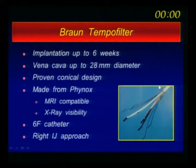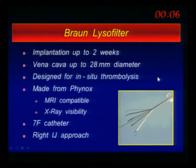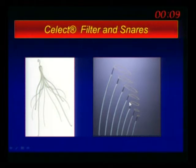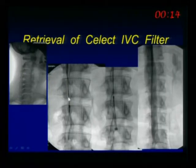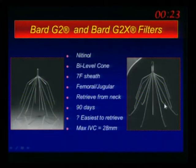That's the rationale for temporary filters — because of these complications, why not just put them when the patient needs them and then remove them? You have a variety of options: the temporary filter, the Lyso filter, the select filter. Here's how you retrieve it: go up from the neck, place the snare, the snare catches the hook, then put the sheath over it and just remove it. Always do a completion venogram to make sure there's no perforation.